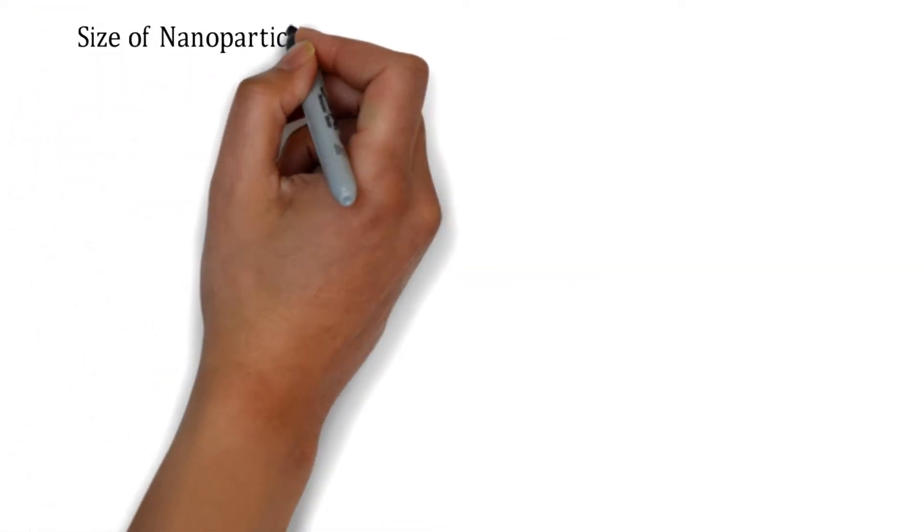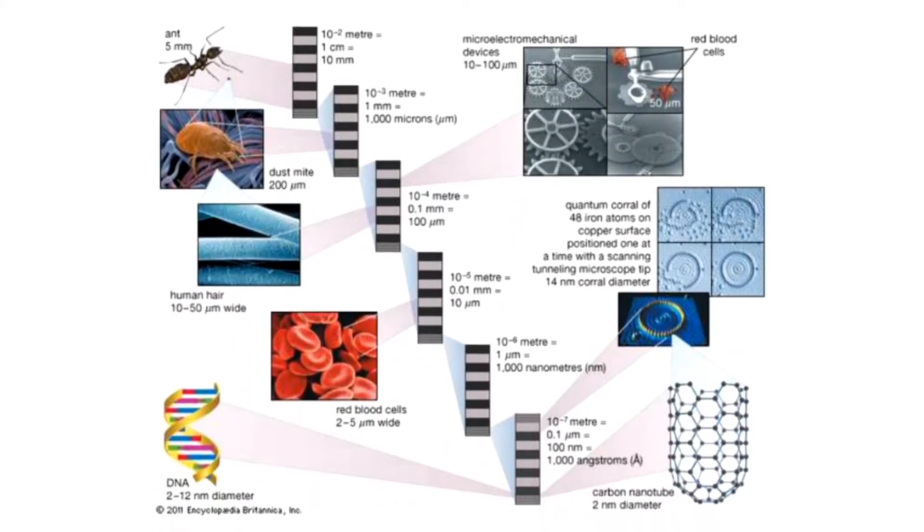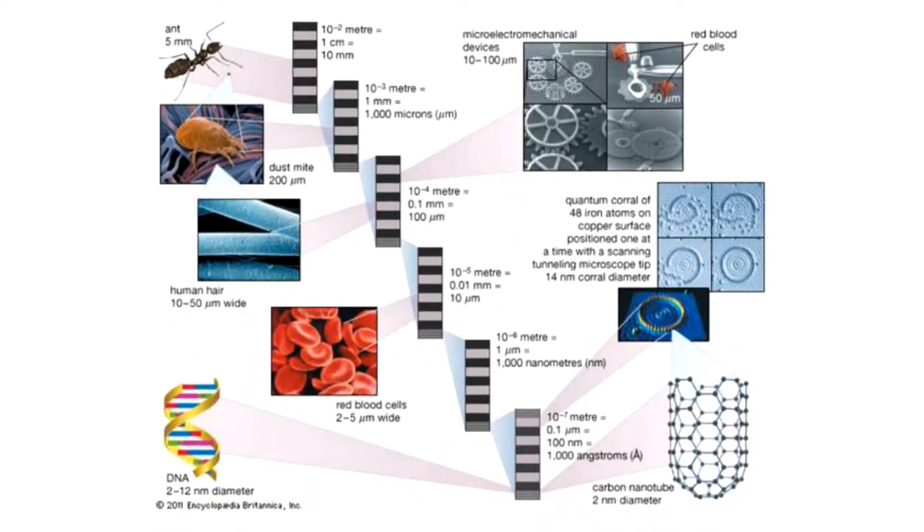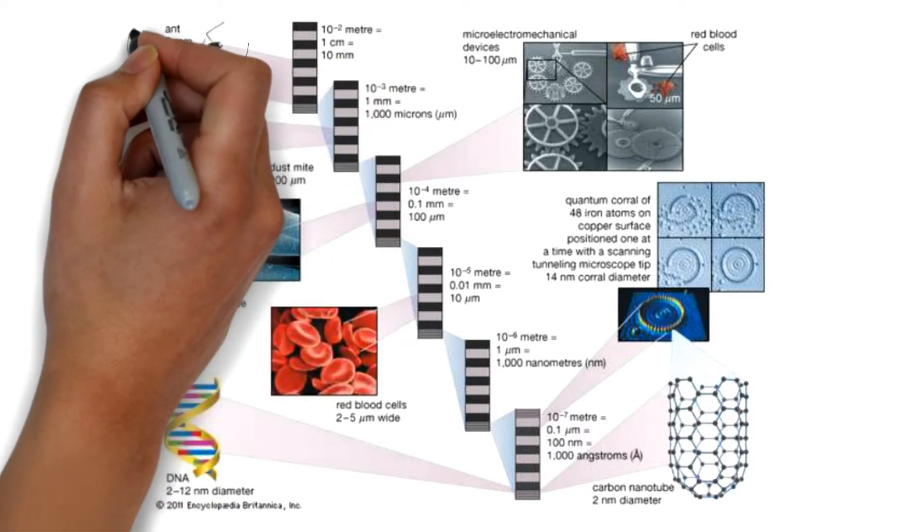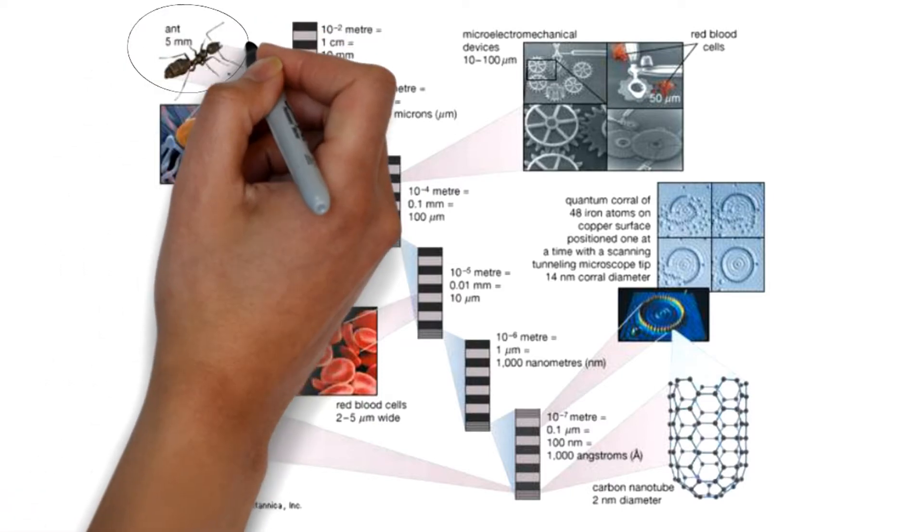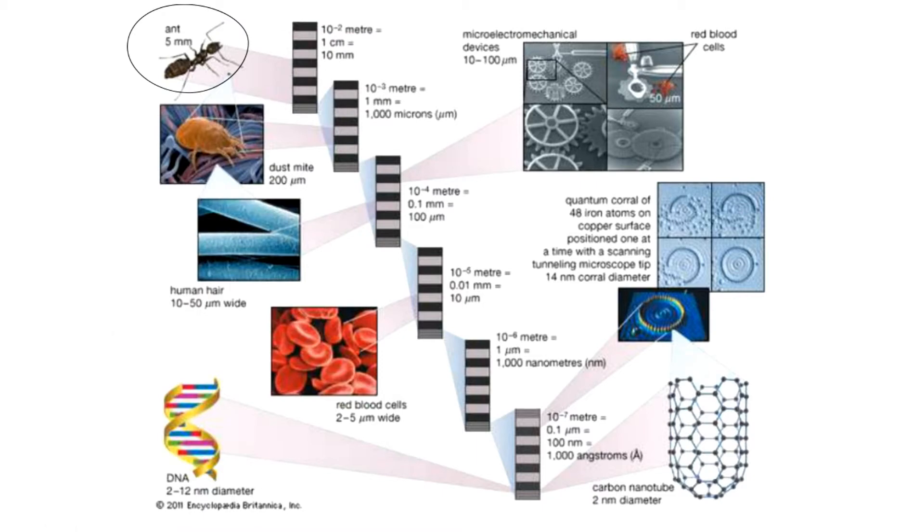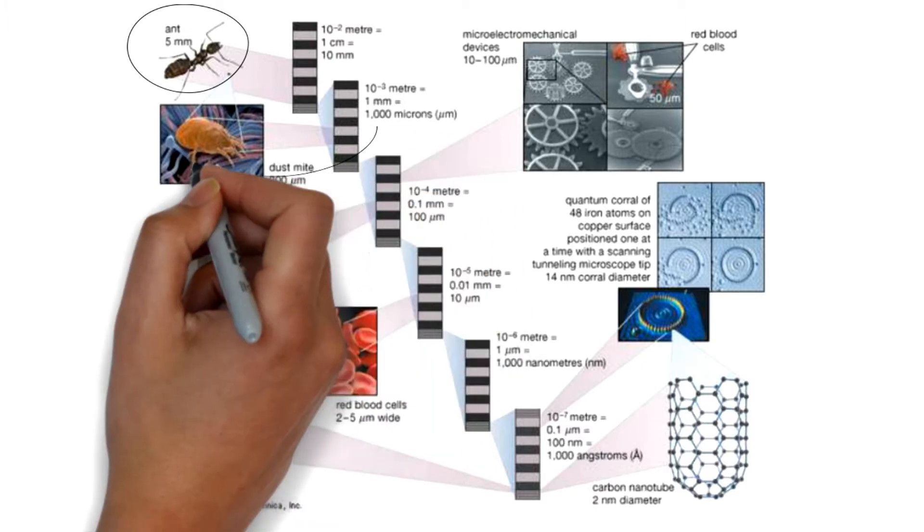Let's understand the size of the nanoparticles, that is the nanoscale. This image shows different sizes. Let's consider the first one: the ant. The size of the ant can vary from one centimeter, that is 10mm to 5mm, which we can clearly see from our eyes, which is very small, that is 10 raised to minus 2 meters, that is 1 centimeter.